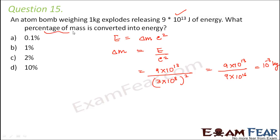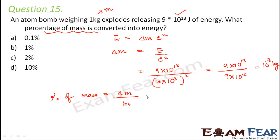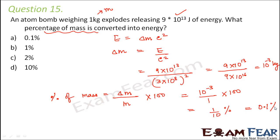Now we calculate the percentage of mass converted to energy: percentage equals (mass defect / original mass) × 100. Delta-M is 10⁻³ divided by 1 kg, multiplied by 100, which equals 0.1 percent. So option A is correct.